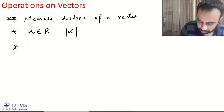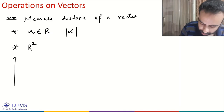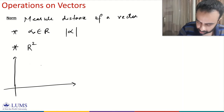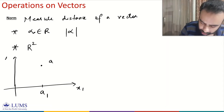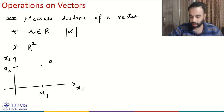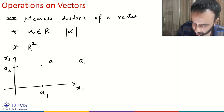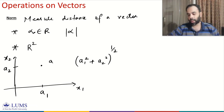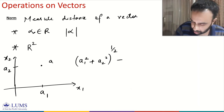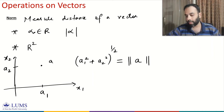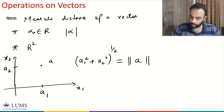We start with R2. We take a vector in R2 — its coordinate on the x1 axis is a1 and on the x2 axis is a2. The distance of that vector from the origin is given by the square root of a1 squared plus a2 squared. This is the definition of norm, and we denote the norm by two vertical lines on either side of the vector a. So the norm of a vector gives you the distance of a vector from the origin.